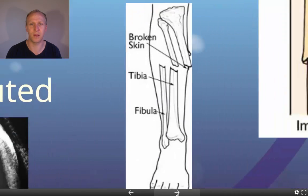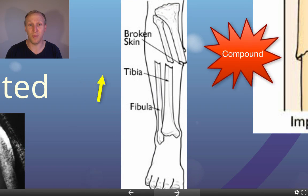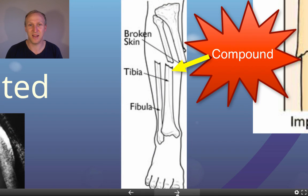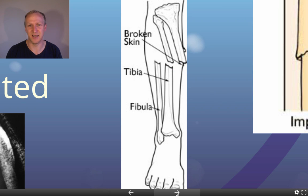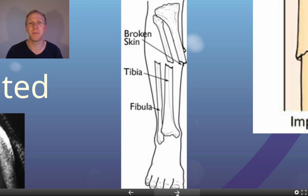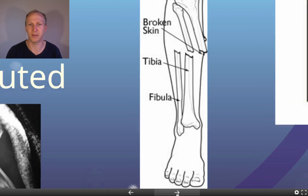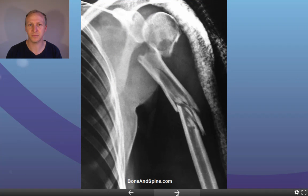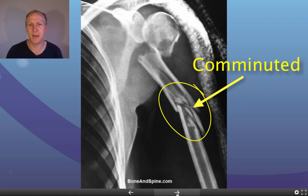A compound fracture is where the bone actually protrudes out of the skin. Some of you might get a bit queasy — if you break the bone badly enough, it can stick out through your skin. A comminuted fracture means there was more than one break, resulting in multiple pieces of bone.